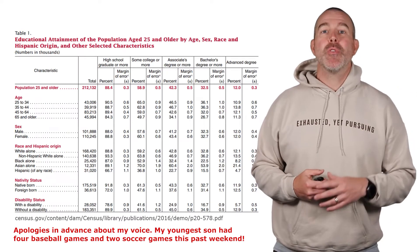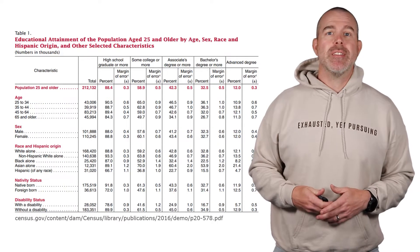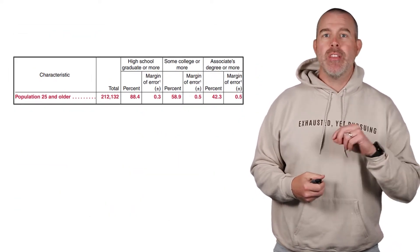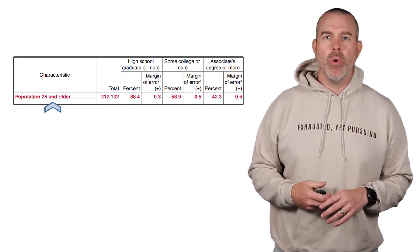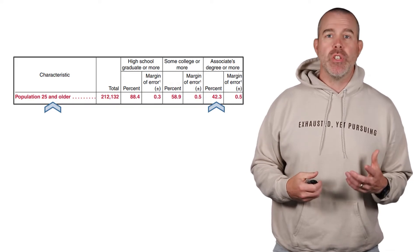You know the drill by now. We're going to introduce this idea by way of an example. I have some US Census data, specifically education data. This is for population ages 25 and older, and about 42.3% have at least an associate's degree.